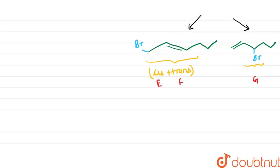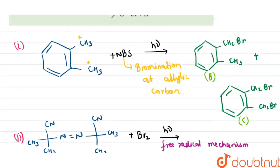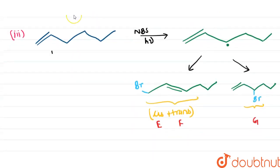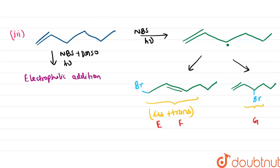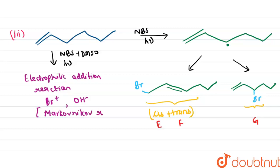So we have three compounds: the cis conformer is E, the trans conformer is F, and the third one is G. Now this compound is treated with NBS in the presence of DMSO and light, so an electrophilic addition reaction takes place. The electrophile is Br⁺ and the nucleophile is OH⁻, following Markovnikov's rule. The product has OH and Br added accordingly — this is compound H.